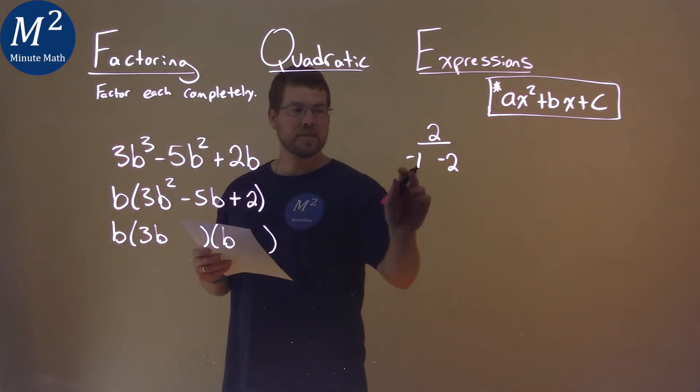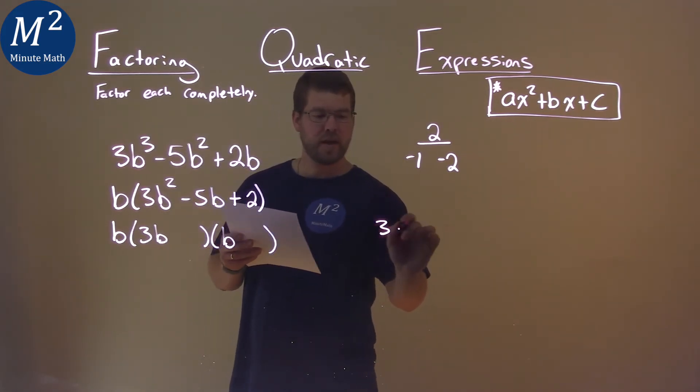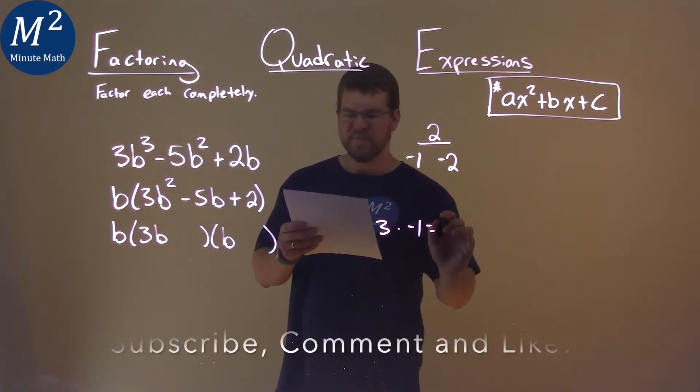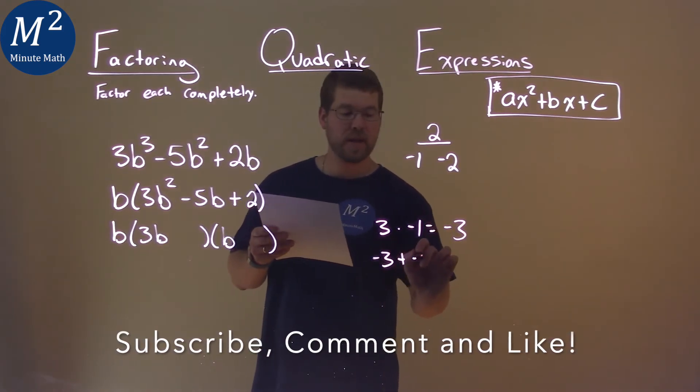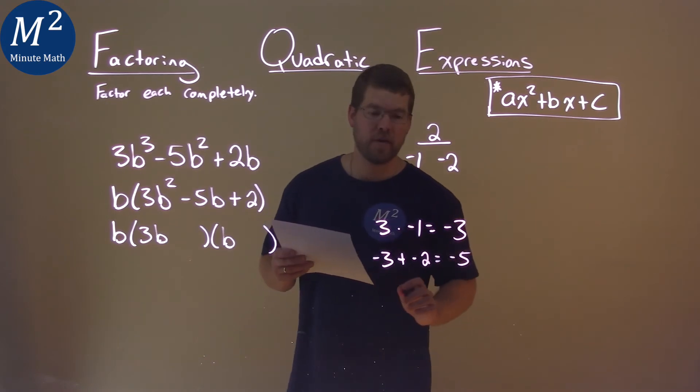That's actually the first one. 3 times negative 1 equals negative 3, and then negative 3 plus negative 2 equals negative 5.